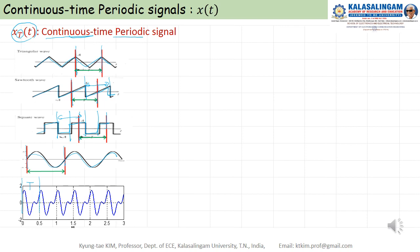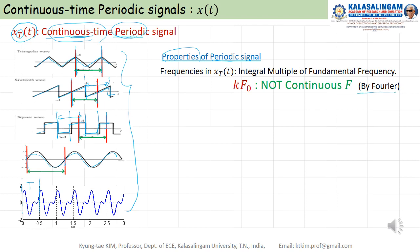Like this, there are many kinds of continuous-time periodic signals. What are the properties of periodic signals? Jean-Baptiste Fourier showed that the frequencies in a periodic signal x(t) are integral multiples of the fundamental frequency f0, which means k·f0, where k is an integer. This means the frequency is not continuous.